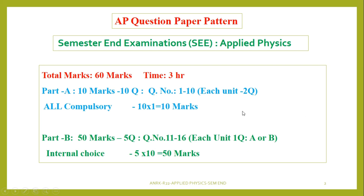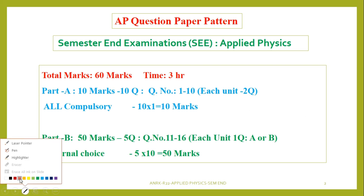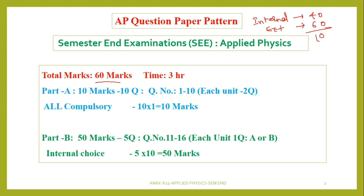When it comes to the exam, internal marks will be for 40 marks and external will be 60 marks, combined it will be 100. Previously we discussed about the internal exams, so if required just check it. For the external exams, total marks is 60 marks, time is 3 hours, and the question paper consists of two parts: Part A and Part B. In Part A, we have 10 questions of each one mark, total 10 marks. All questions we have to write compulsory.